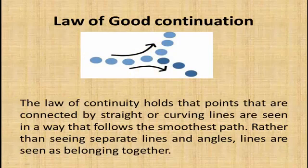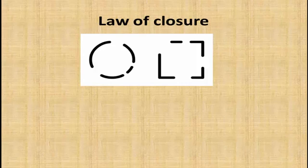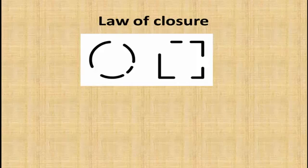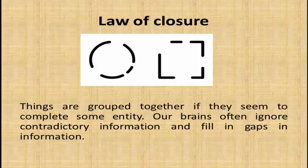The law of closure means that if something is missing in a circle or square, our brain fills in that gap and you perceive it as a complete circle or square. Things are grouped together if they seem to complete some entity. Our brain often ignores contradictory information and fills in gaps in information.